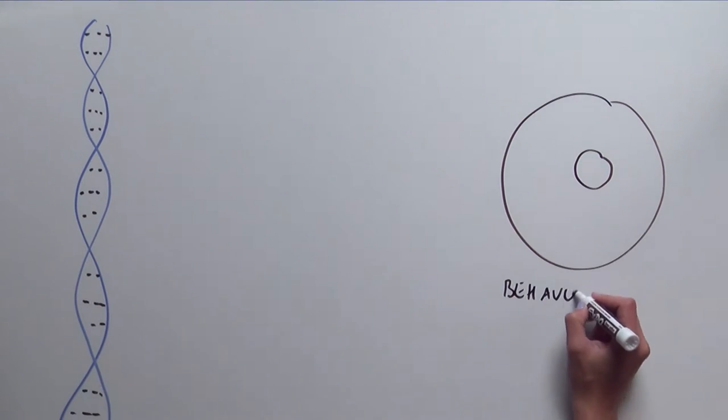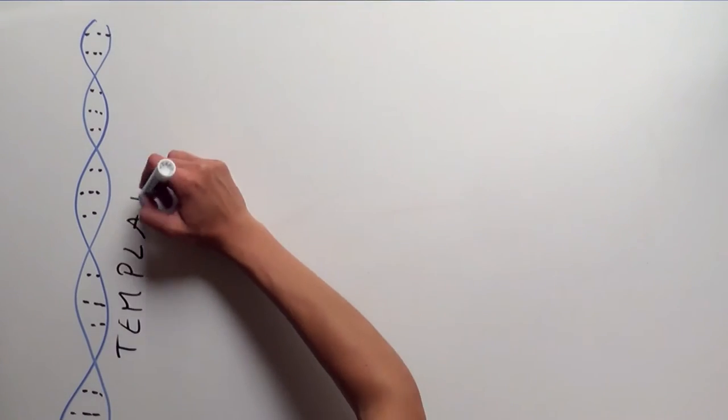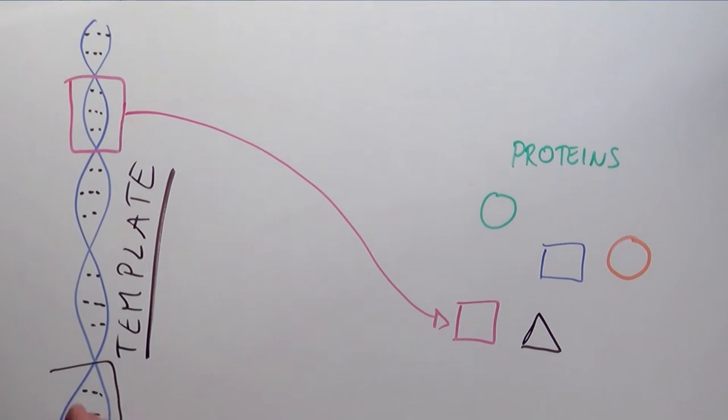Our DNA influences the behavior of our cells. DNA is found in the nucleus, and it provides the template for the production of proteins. So a specific DNA sequence makes a specific protein.